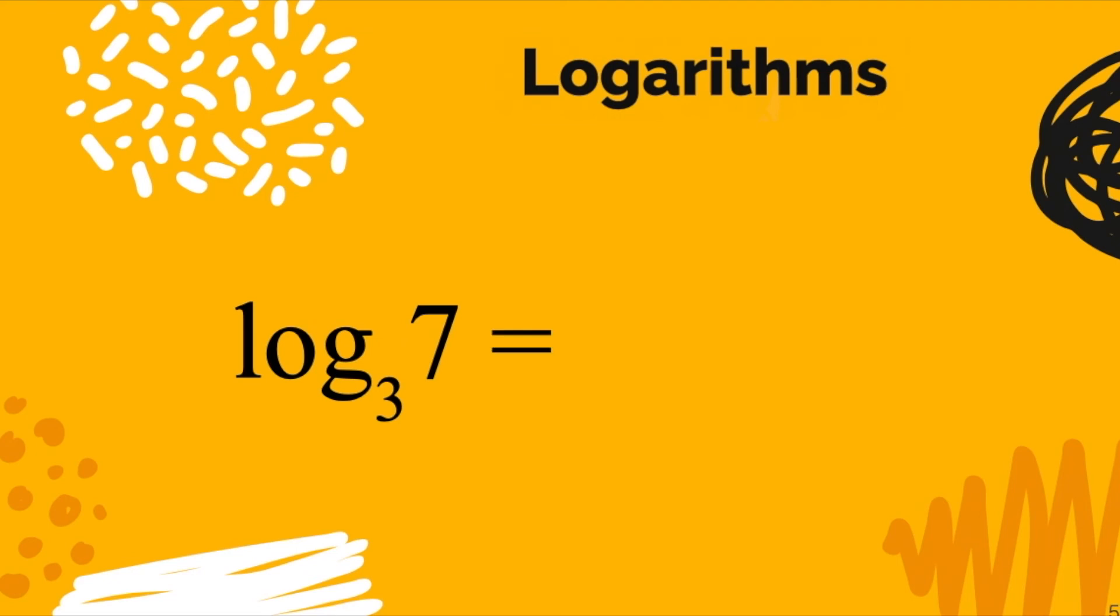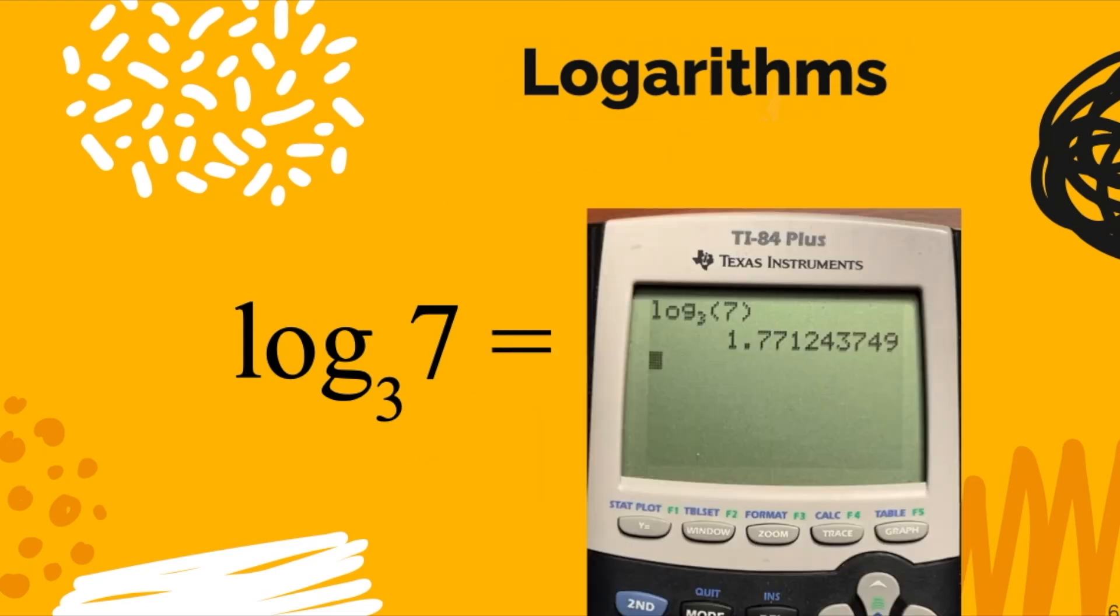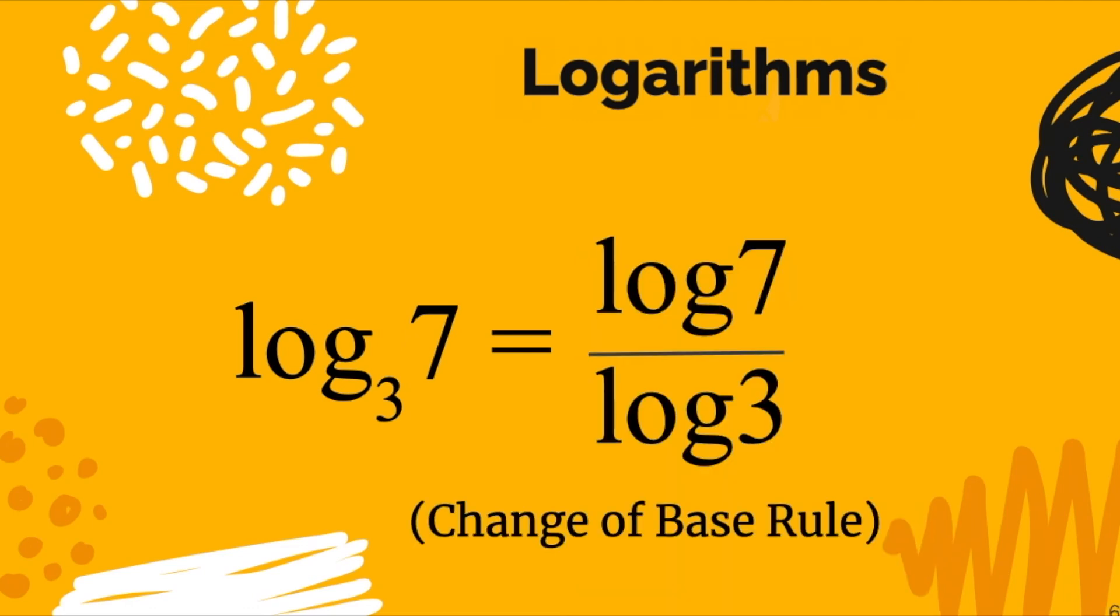When we are solving the equation 3 to the x equals 7, we can focus on the logarithmic form. So the answer is log base 3 of 7. What if you want to find the decimal, which happens to be 1.77124? How did I find that? Well, one way is you go to your calculator, and a lot of advanced calculators have different bases.